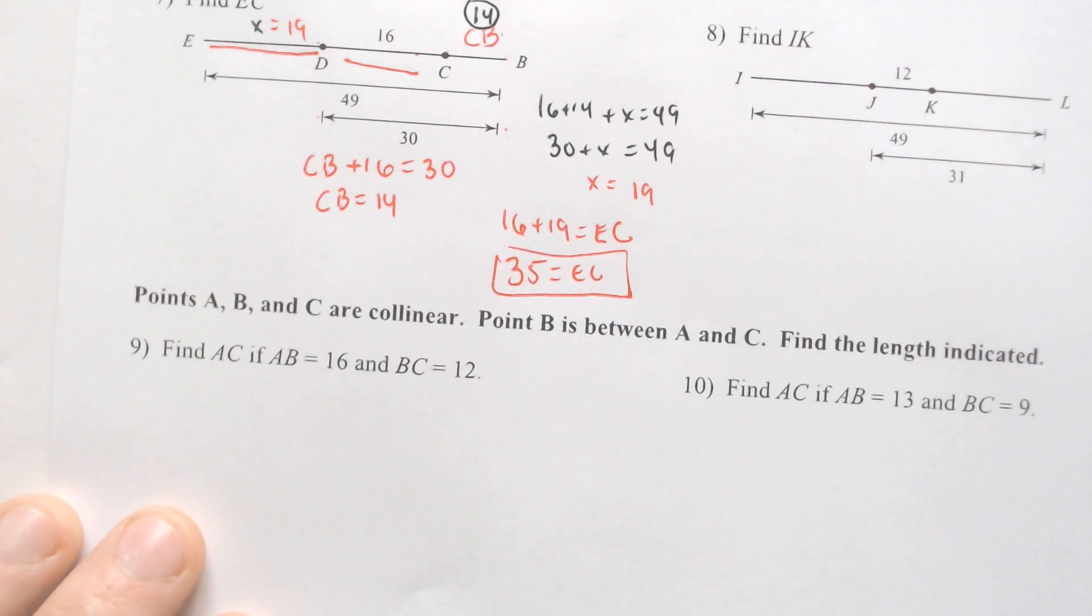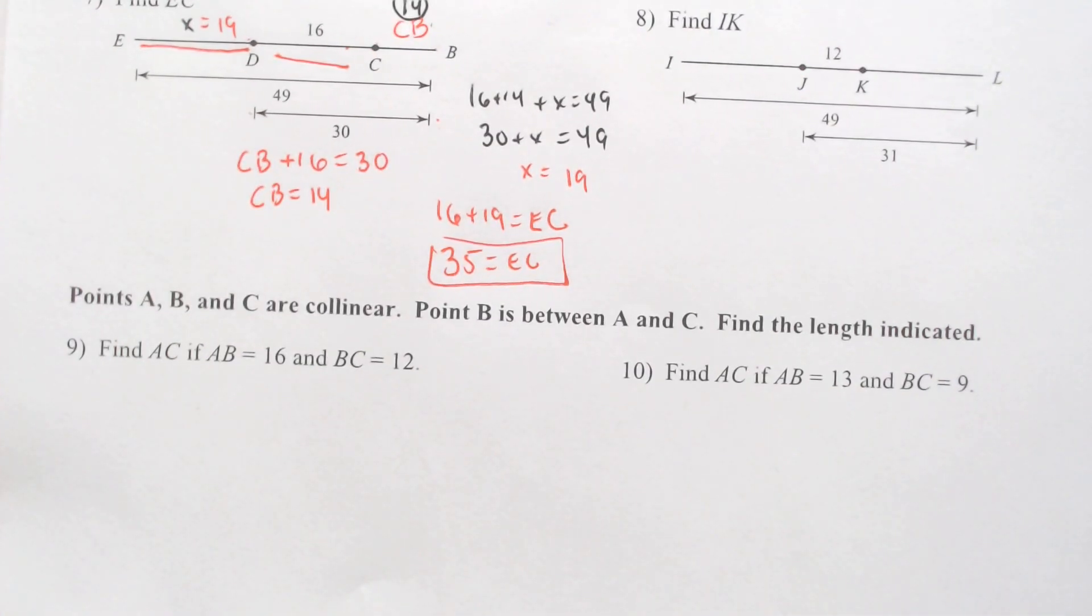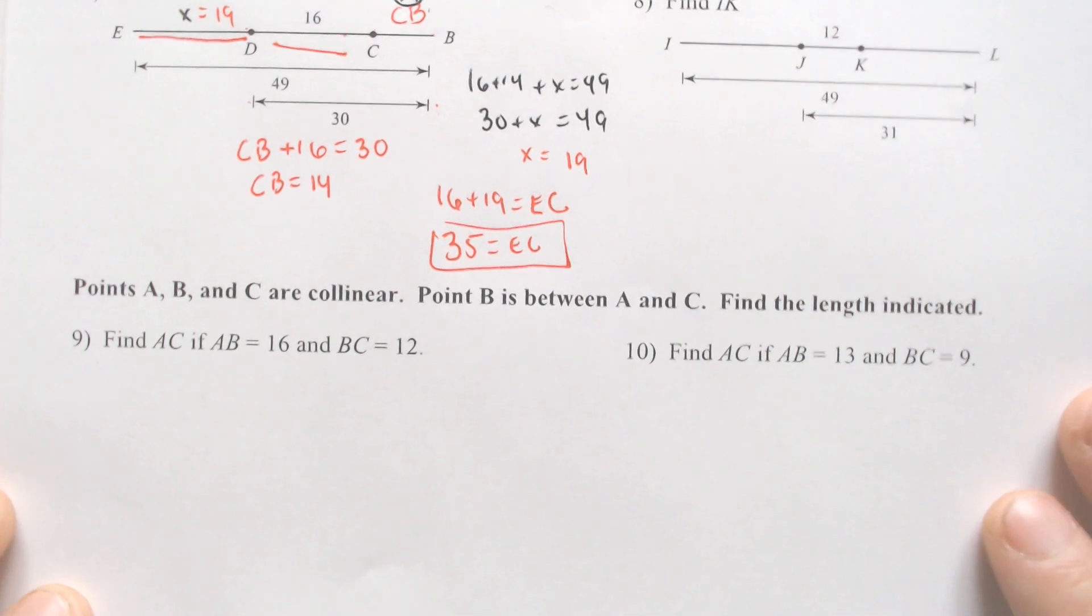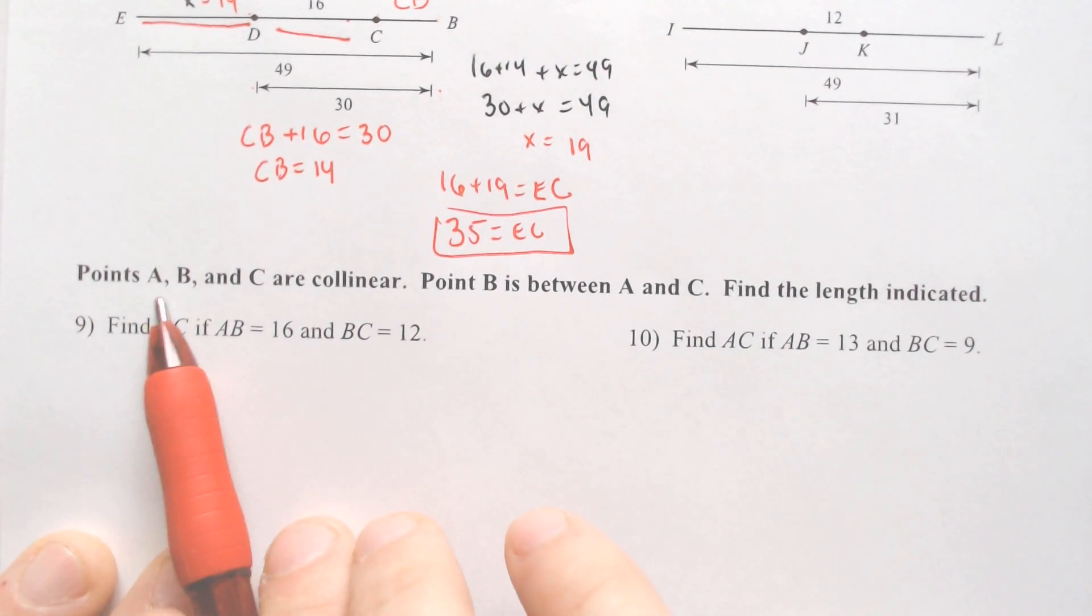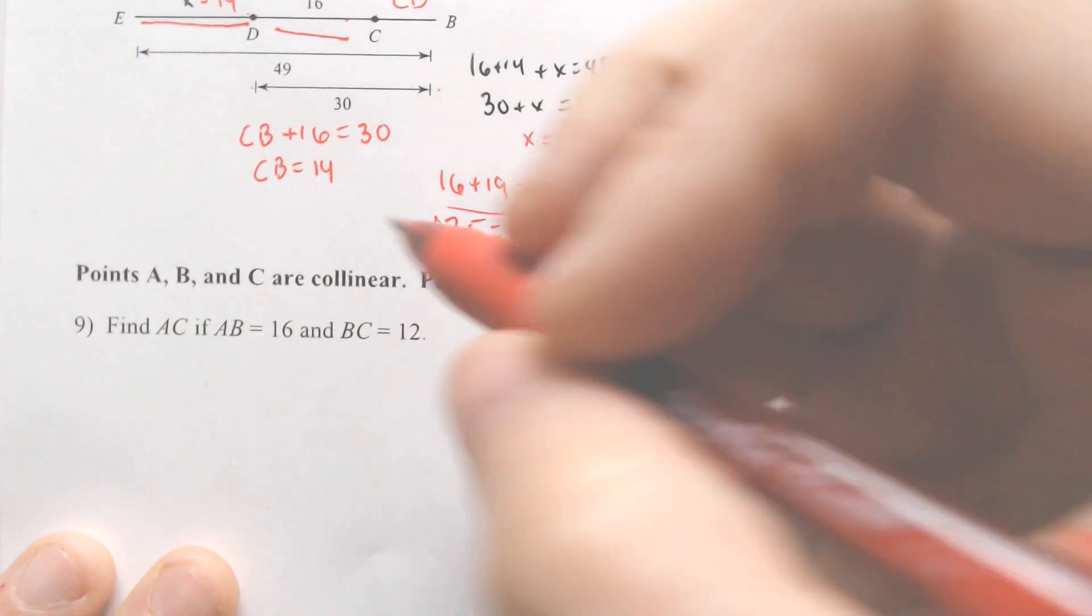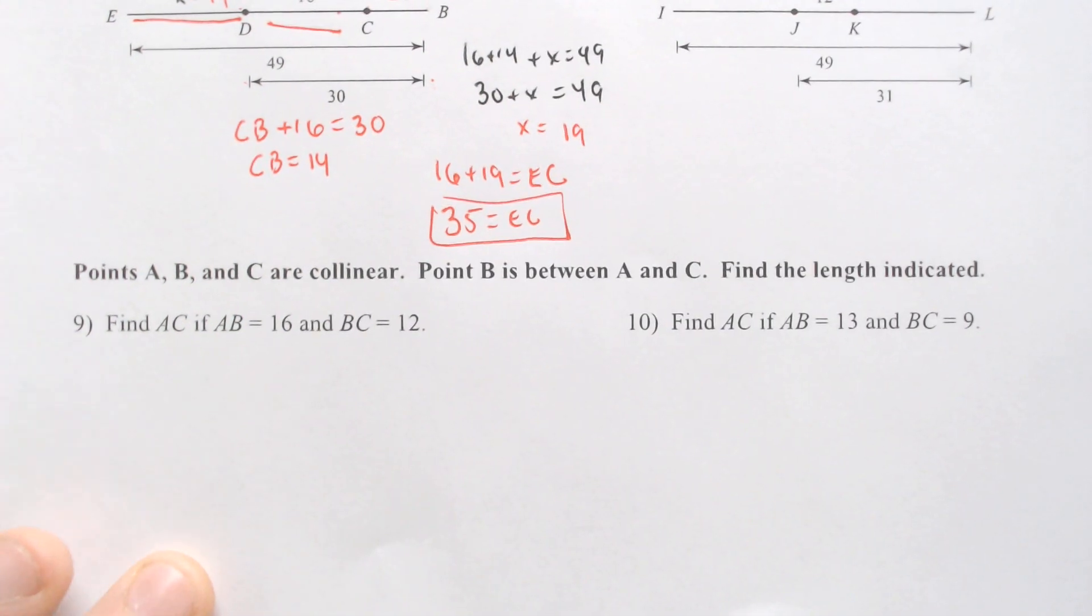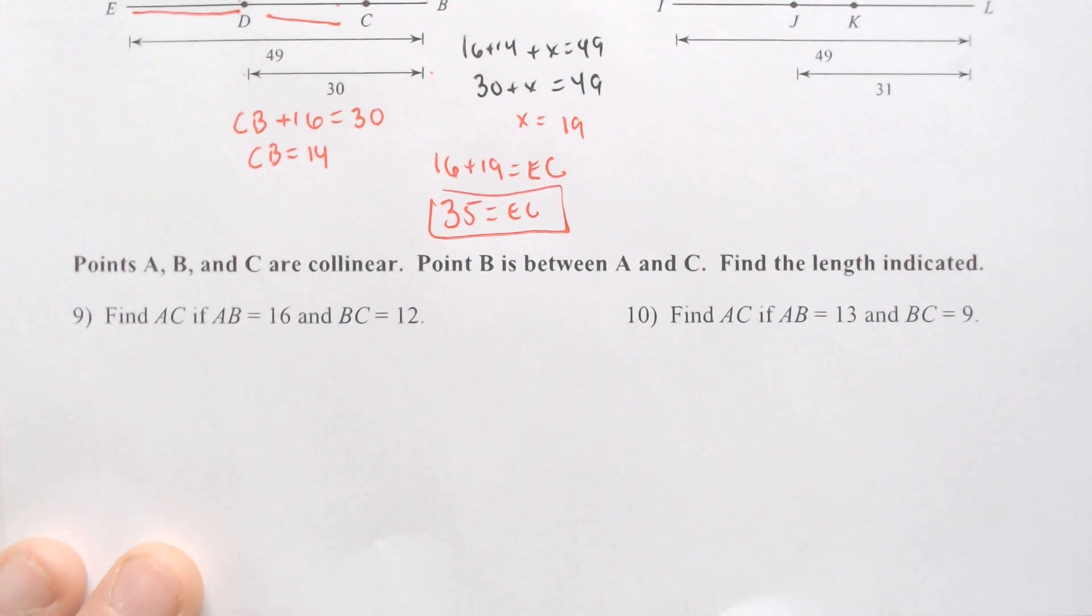The next one we're going to be doing is without the drawing, and it will normally start with something saying that A, B, and C are all collinear. Collinear is just a fancy name for saying a part of the same line.